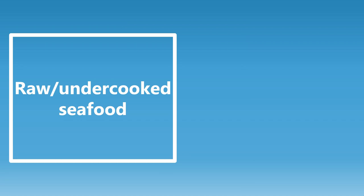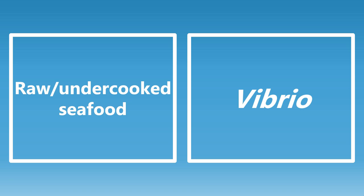Raw or undercooked seafood — the big organisms you need to know are Vibrio, more specifically Vibrio parahemolyticus and Vibrio vulnificus. Note this is not Vibrio cholerae — that is different. Raw or undercooked seafood, you want to be thinking Vibrio parahemolyticus or Vibrio vulnificus.